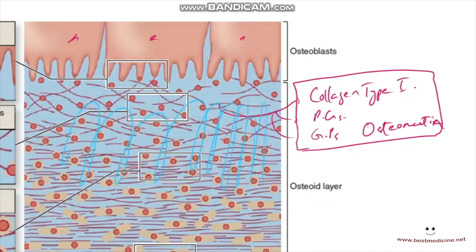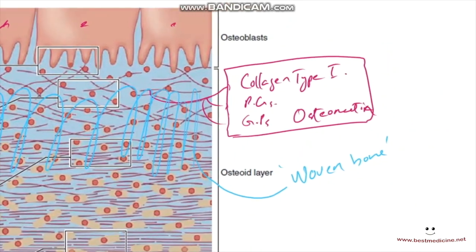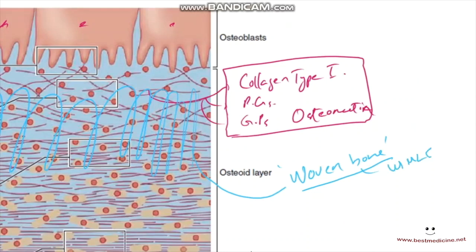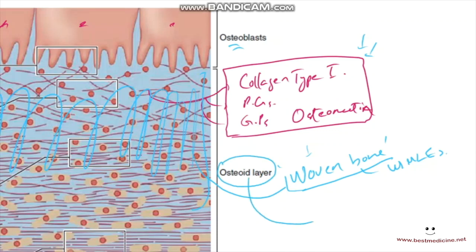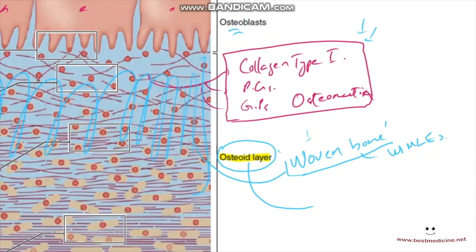This soft bone is also called woven bone — always remember this term, as it is used frequently in USMLE questions. Woven bone is first formed and then ossified. This woven bone layer is also referred to as the osteoid layer.